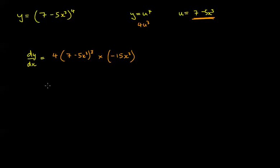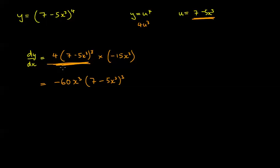Cleaning this up: minus 15 times 4 is minus 60x cubed, times (7 minus 5x cubed) to the power of 3. So we've done it in one go. Imagine putting your thumb over the bracket and imagining it was a letter, differentiating it — you get 4 times that bracket to the power of 3 — then multiply by the derivative of whatever is on the inside. That's the chain rule done quickly without writing it in full.